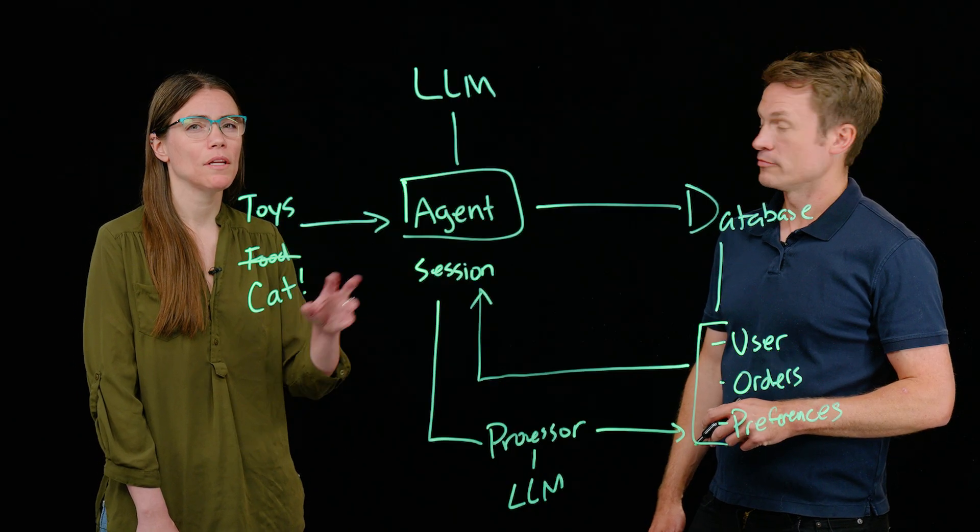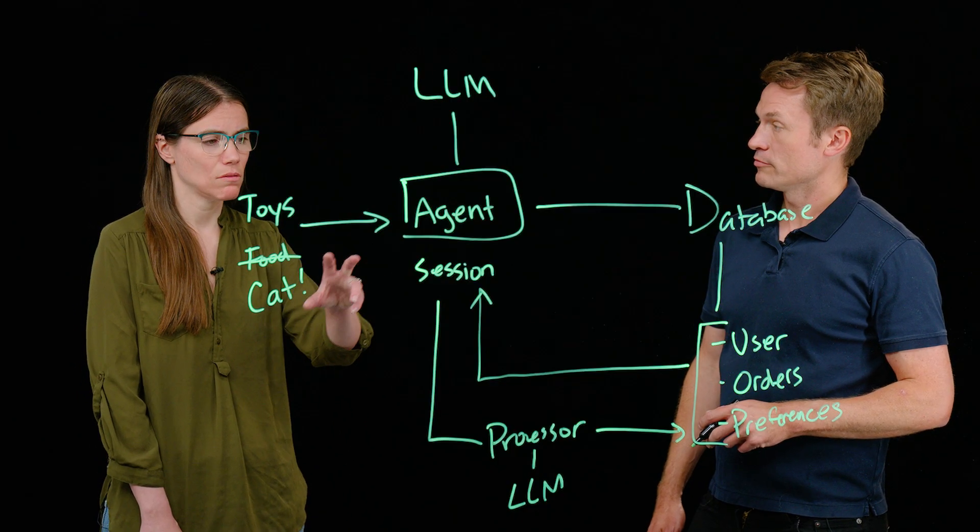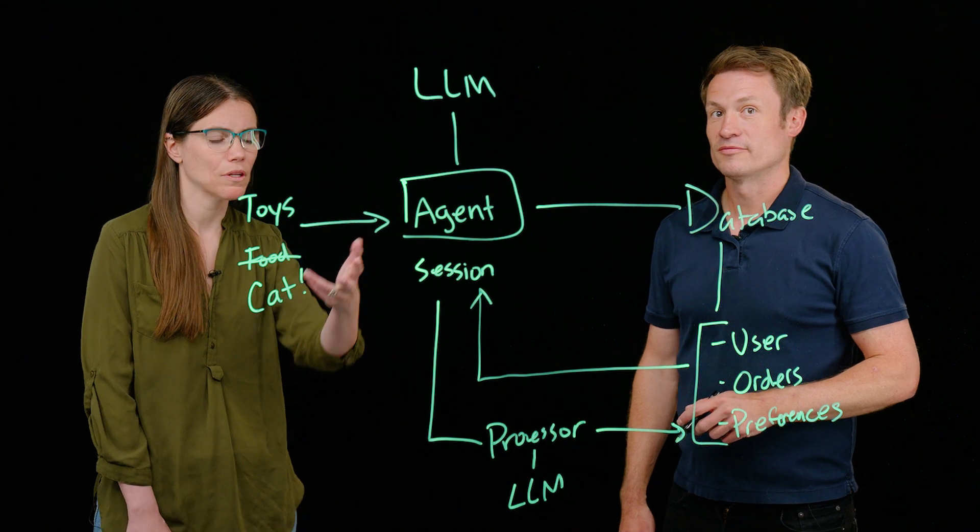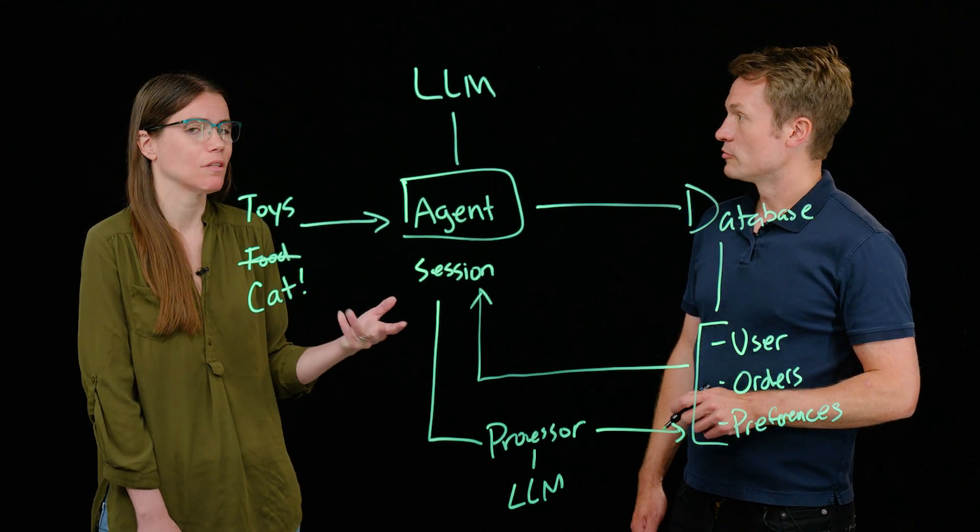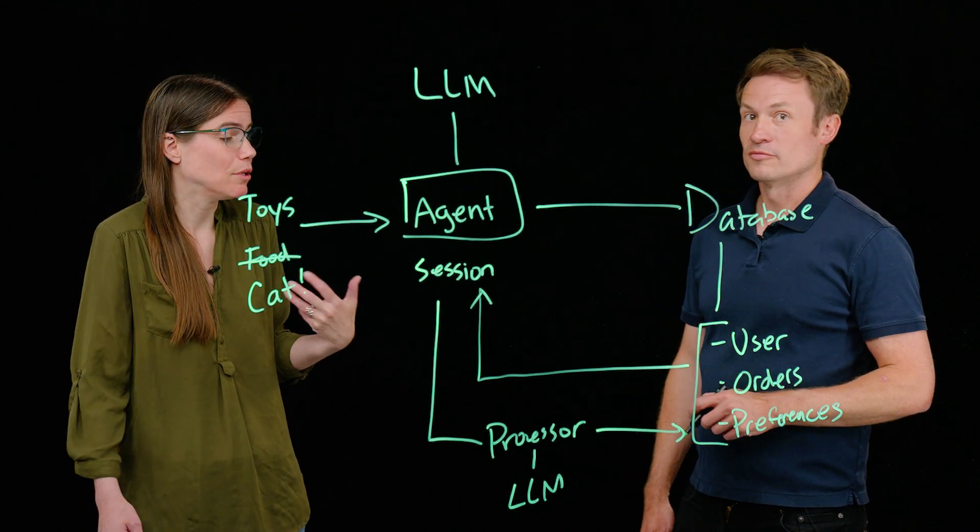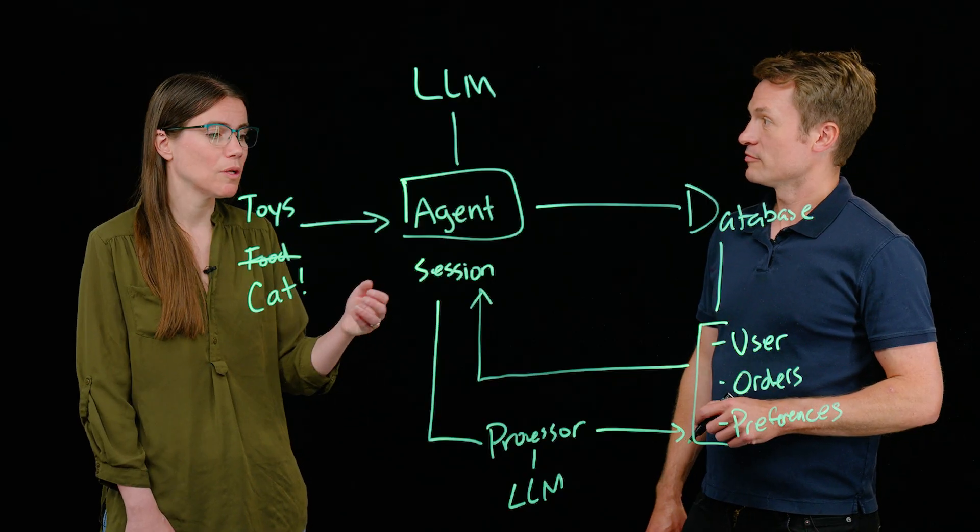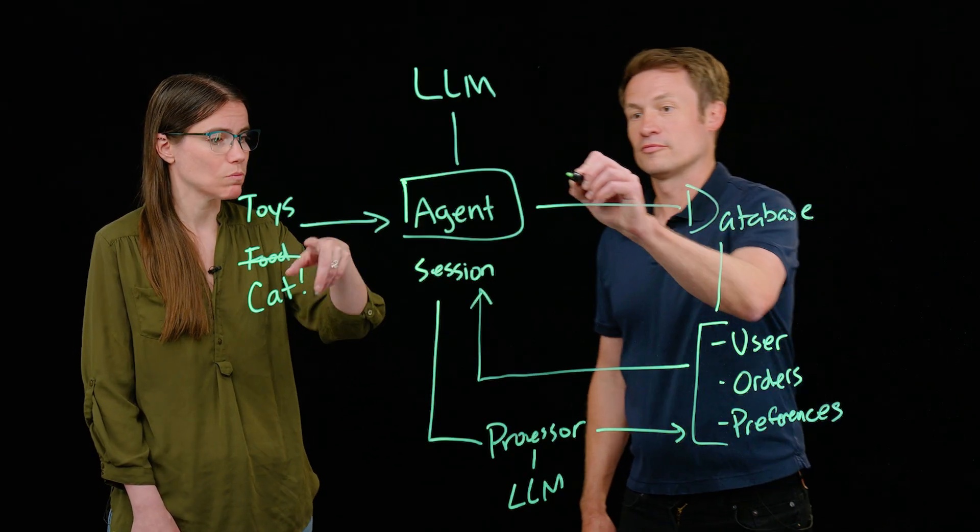So we can use memory and state for other parts of the system, too. For example, like one thing I've run into is sometimes agents, like, they'll use the wrong tool, or in my opinion, the wrong tool. And I want to be able to say, hey, don't do that again. Can we use memory for that?